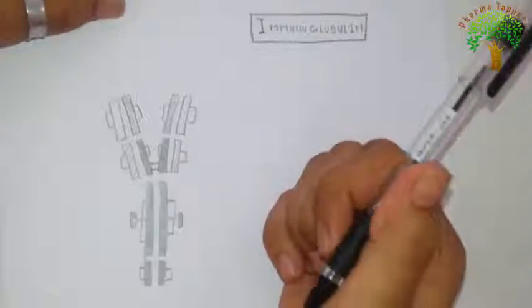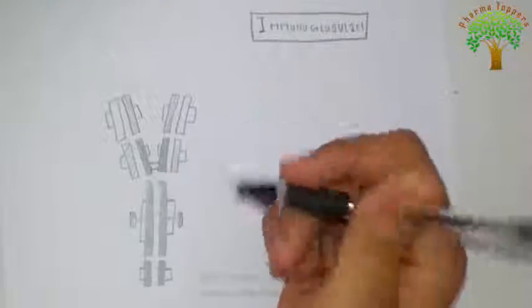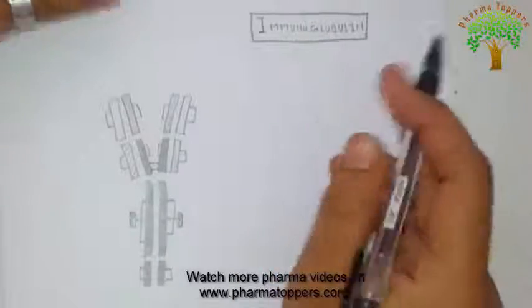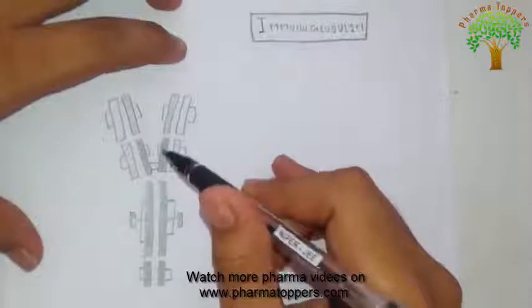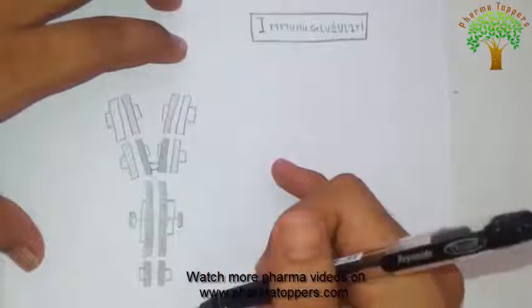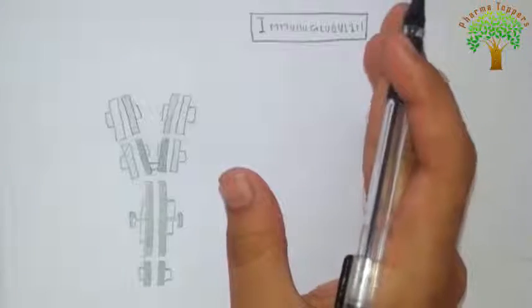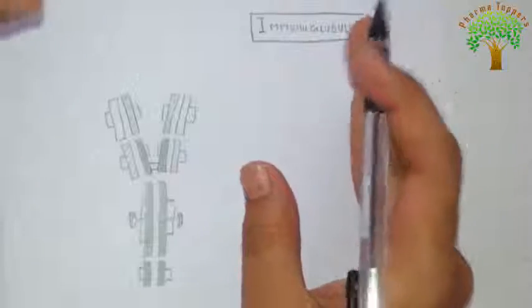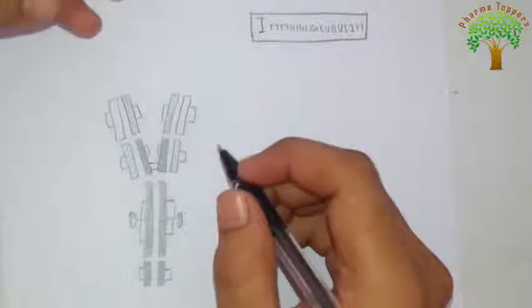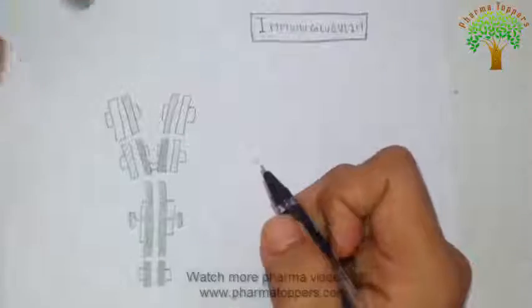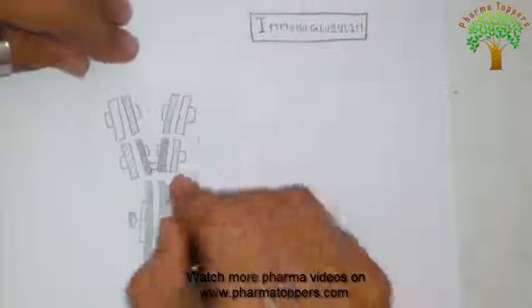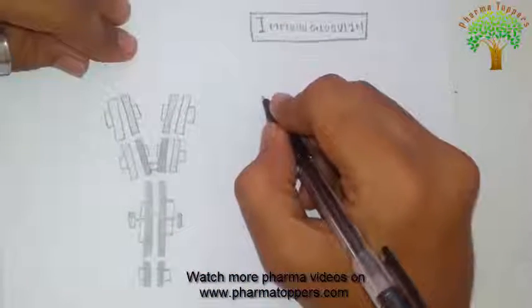Welcome to the Pharmatophers friends. Today what I am going to cover is the immunoglobulin. For sake of convenience, I have already drawn the figure of immunoglobulin — how a simple immunoglobulin normally looks like. So here I am going to start with the basic structure of the immunoglobulin, which mainly has five things.